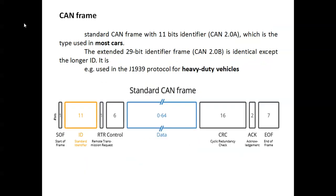The standard CAN frame with the 11-bit identifier is CAN 2.0A — most cars use CAN 2.0A. The extended version with a 29-bit identifier is CAN 2.0B, which is identical except for the longer ID. CAN 2.0B is used in heavy-duty vehicles. So the standard CAN frame has two types: 11-bit (CAN 2.0A) used in cars, and 29-bit (CAN 2.0B) used in heavy-duty vehicles.